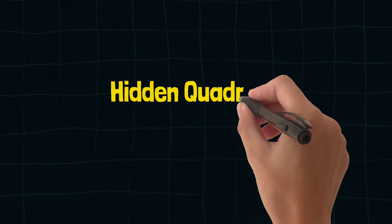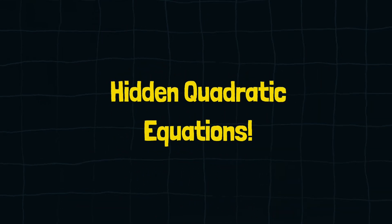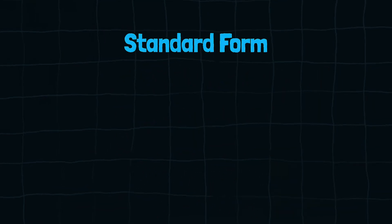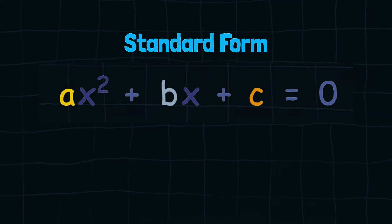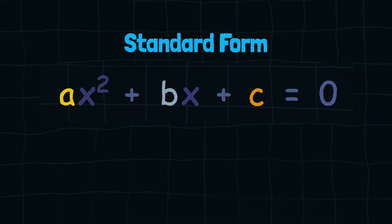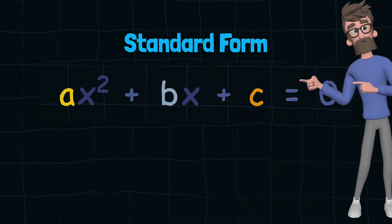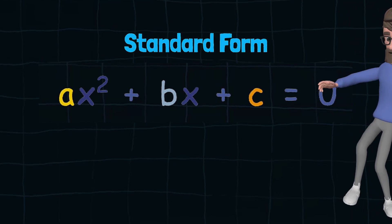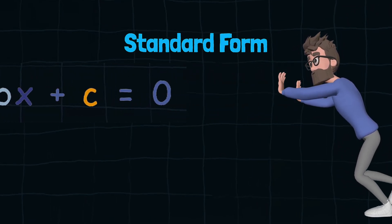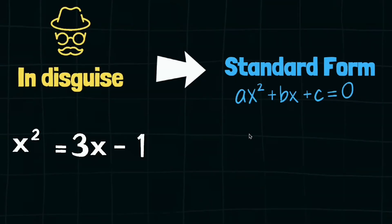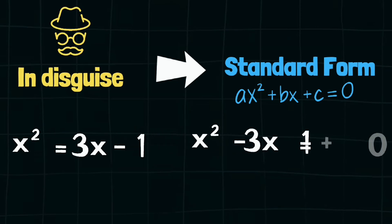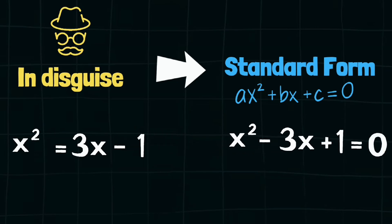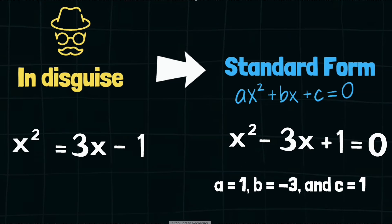Now let's talk about the hidden quadratic equations. As we saw before, the standard form of a quadratic equation is ax squared plus bx plus c equals 0. But sometimes a quadratic equation does not look like that. For example, in disguise we have x squared equals 3x minus 1. To transform it to standard form, we move all terms to the left-hand side: x squared minus 3x plus 1 equals 0, where a is 1, b is negative 3, and c is 1.